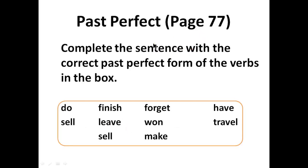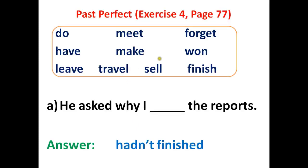Now we are going to do Exercise 4 on page 77: complete the sentence with the correct past perfect form of verbs in the box. In this box you will find 10 verbs. You will take one of these 10 verbs to complete each sentence on page 77, Exercise 4.